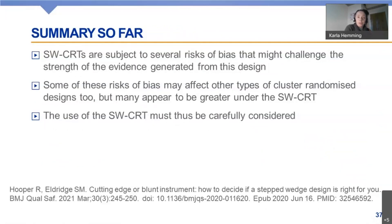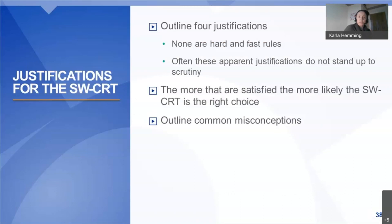Summary so far: stepped wedge trials are at several risks of bias that might challenge the strength of evidence generated from this design. Some of these biases are common in parallel cluster trials and other repeated measures designs, but many appear to be greater under the stepped wedge design. Therefore, use of the stepped wedge design has to be very carefully considered. I want to think through four possible justifications for when the stepped wedge design might be a good design choice — none intended as hard and fast rules. Often these apparent justifications don't stand up to scrutiny, and the more that are satisfied, the more likely the stepped wedge design is the right choice.